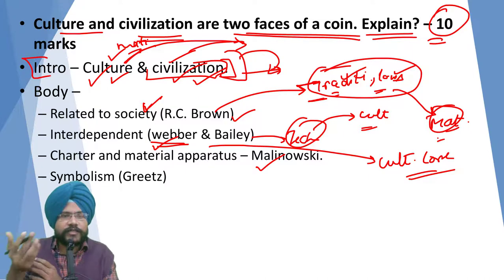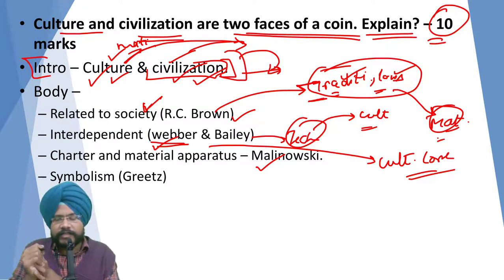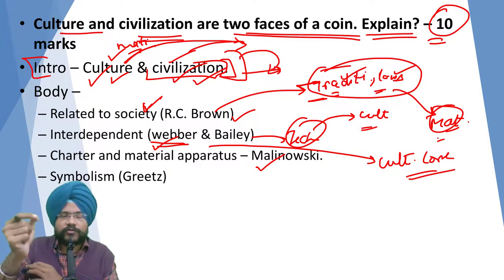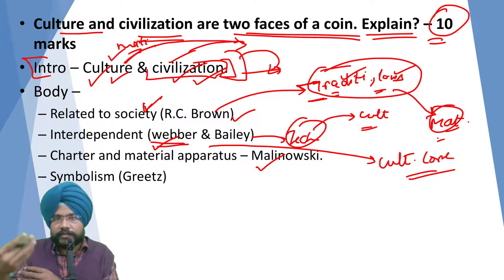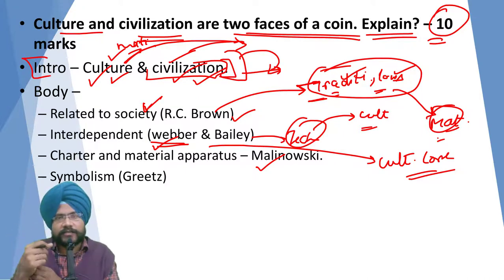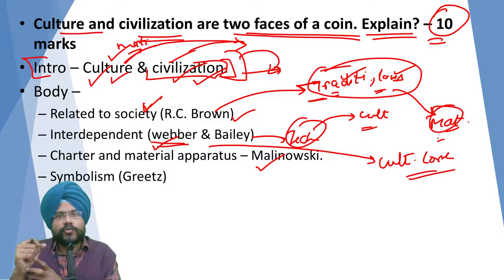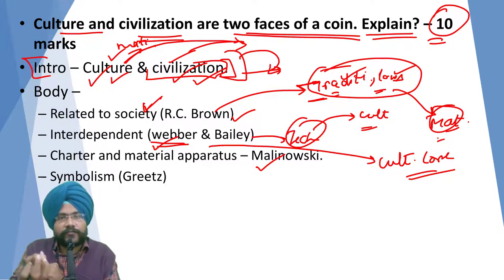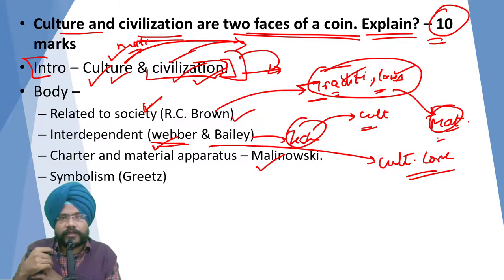Then you have Malinowski, who gave the concept of charter and material apparatus. As the material apparatus changes, the ethos changes too, because society has to use the material apparatus to survive — so that its institutions can survive. And the charters — meaning ethos and ideas — decide which material apparatus will come in so that they too can survive. Malinowski said every element of culture operates this way to build its utility, and only by having utility can it survive and remain established in that culture and society.